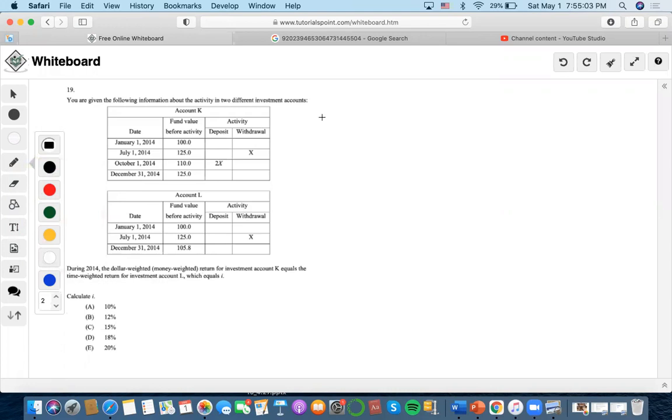So we should just start with the dollar-weighted return equation. First we need to find the interest earned. So we do that by doing 100, the beginning balance, minus the withdrawals of x, plus 2x deposits, plus interest, which we need to find, equals to the last value of 125. Now we subtract 100 from both sides, and then we combine these and we find out that the interest equals 25 minus x.